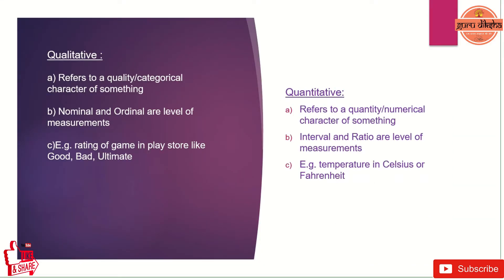So far we have completed primary data and secondary data. Now let's move to qualitative and quantitative — these are two main topics for the entire statistics. Qualitative refers to a quality or categorical character, whereas quantitative refers to a quantity or numerical character. Nominal and ordinal, and interval and ratio are the levels of measurements. In case of qualitative, examples include rating of a game in the Play Store — like good, bad, ultimate, average, or excellent. For quantitative, an example is temperature in Celsius or Fahrenheit degrees.